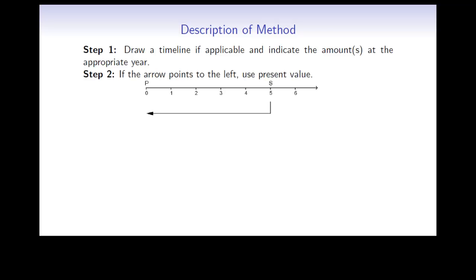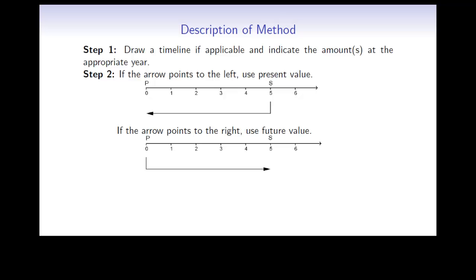Step 2: If the arrow points to the left, you would use present value. For example, if S is given in year 5 and you are trying to find P in year 0, the arrow points to the left and you use present value. If the arrow points to the right, you would use future value — for example, if you are given P and want to find S five years in the future, you would use future value.